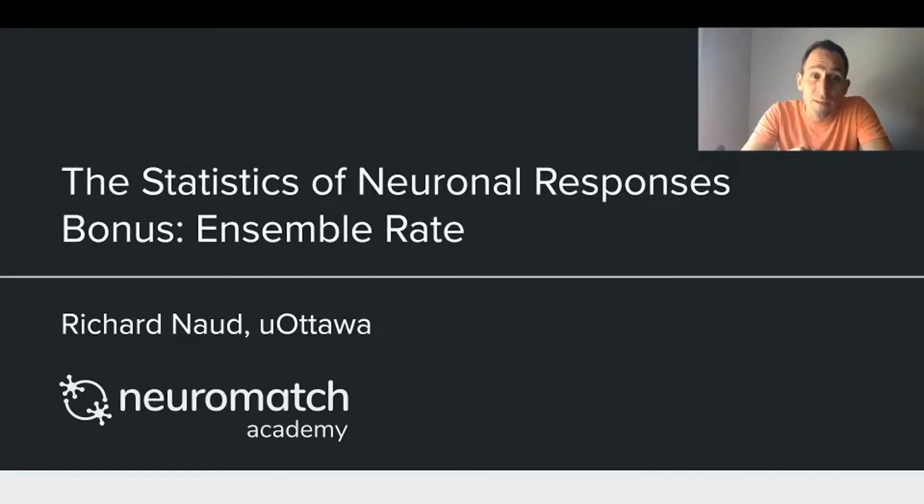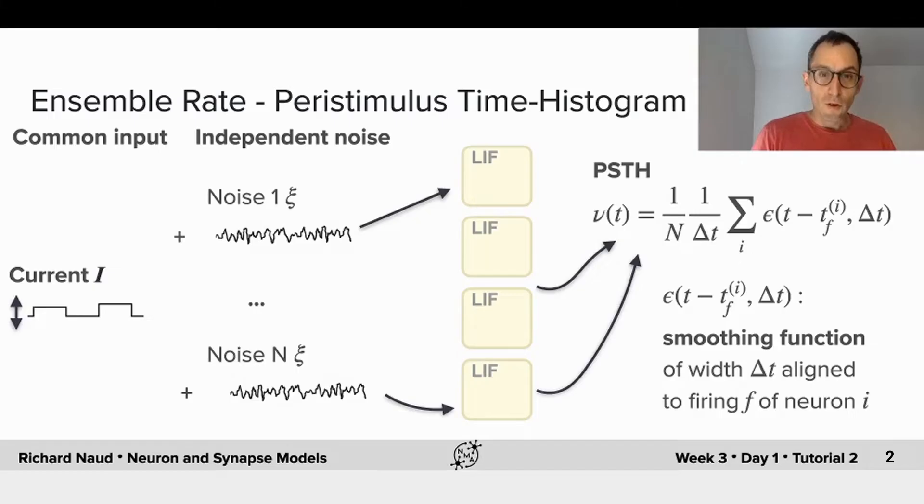Here is some bonus material about ensemble rate. So we've treated statistics of single neurons. Now we can start to think about a population of neurons. Let's consider a population of leaky integrate-and-fire neurons all receiving the same input, and this input can be time dependent.